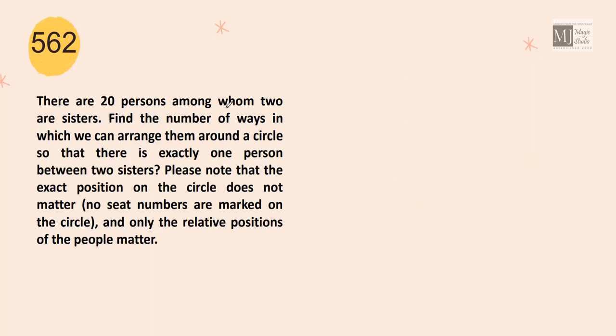There are 20 persons among whom 2 are sisters. Find the number of ways in which we can arrange them around a circle so that there is exactly 1 person between 2 sisters. Please note that the exact position of the circle doesn't matter. Everything about circular arrangement is given.